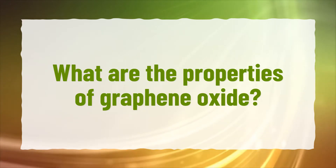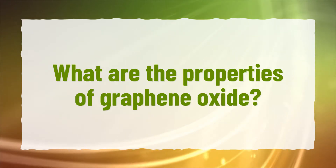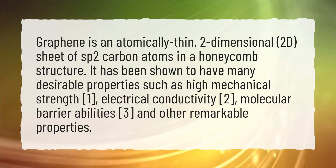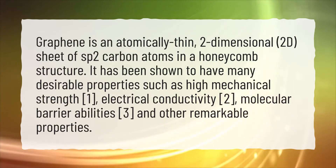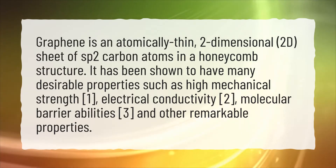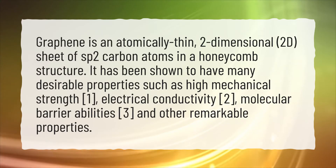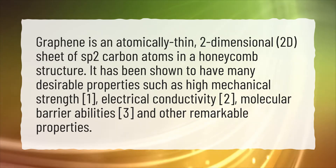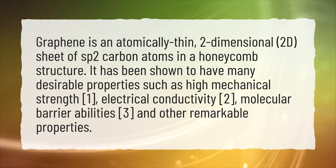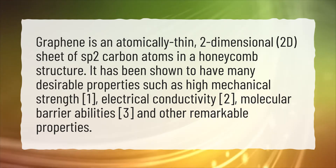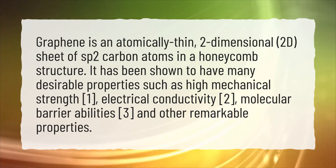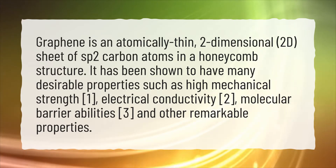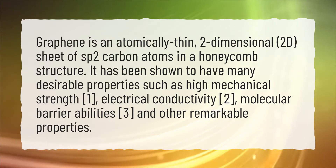What are the properties of graphene oxide? Graphene is an atomically thin, two-dimensional (2D) sheet of sp2 carbon atoms in a honeycomb structure. It has been shown to have many desirable properties such as high mechanical strength, electrical conductivity, molecular barrier abilities, and other remarkable properties.